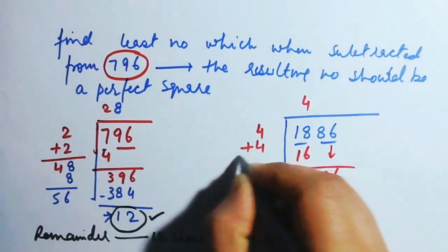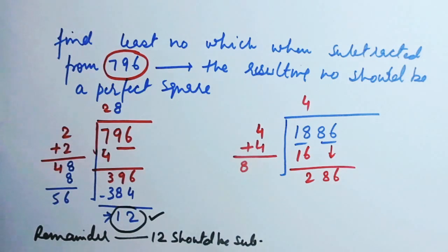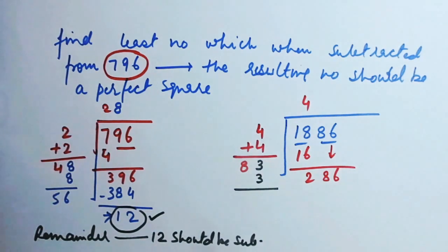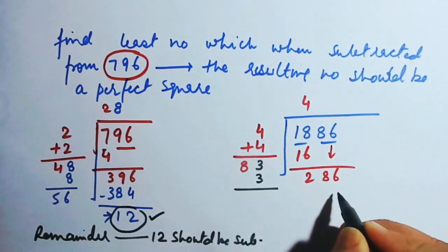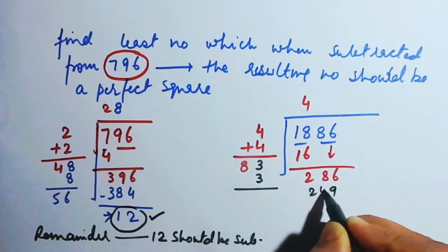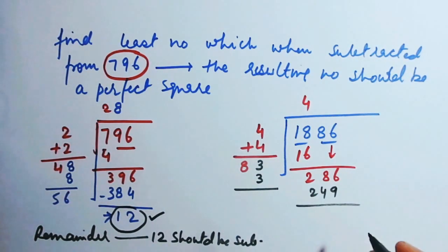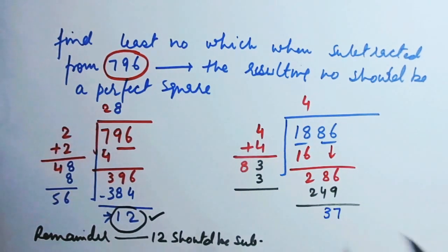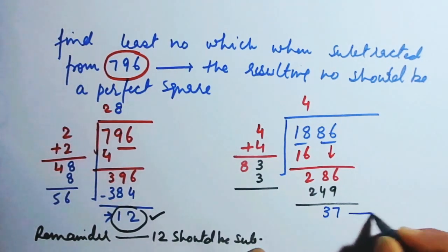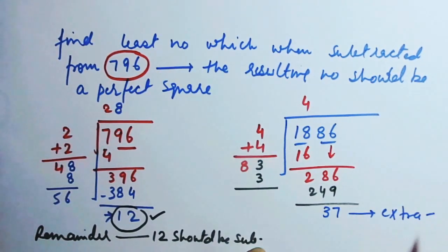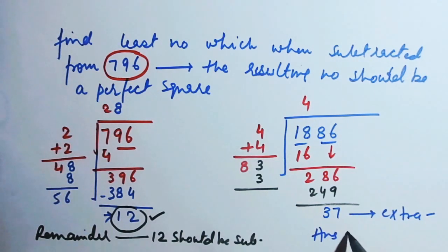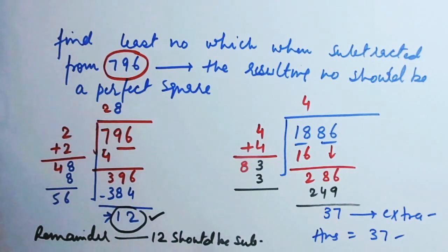Four should be added over here: four plus four is eight. Then put a number beside eight such that when multiplied by itself you get close to 286. Eight times three is 24, so 83 times three is 249. My remainder will be 37. This extra 37 should be subtracted from 1886 to make it a perfect square. So the answer is: 37 should be subtracted.